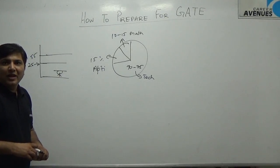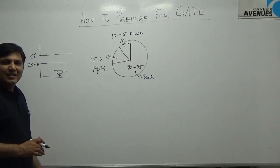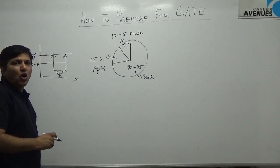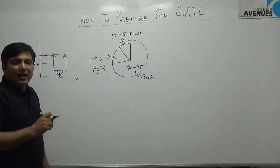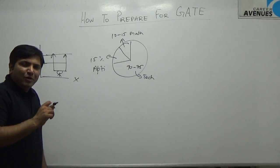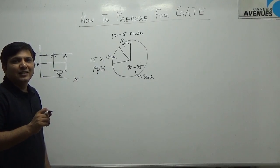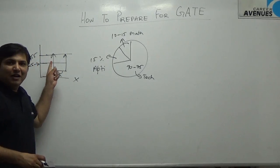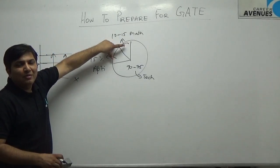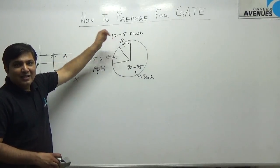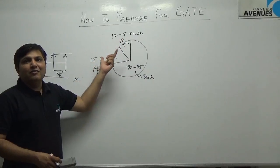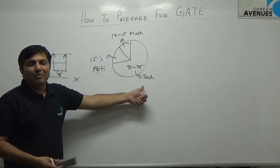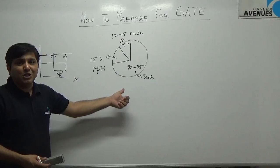Even if everyone starts at roughly the same level, the path to success is different for each person. If you are strong in mathematics, out of the 25 to 30 marks for aptitude and mathematics, you might score close to 20 or more. Someone not strong in mathematics might score only 5 to 10 from those sections, meaning they need 45 marks from technical instead of 30. The entire preparation strategy therefore has to be different for different people.